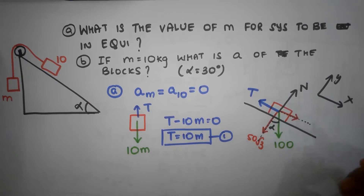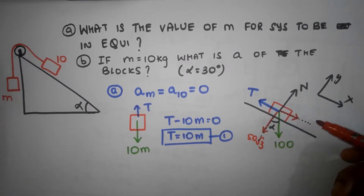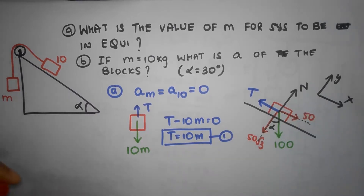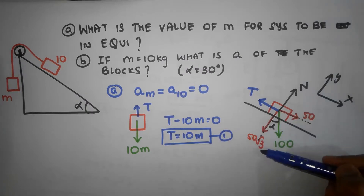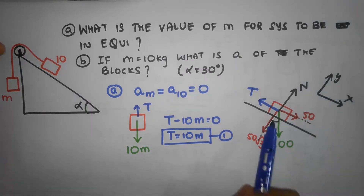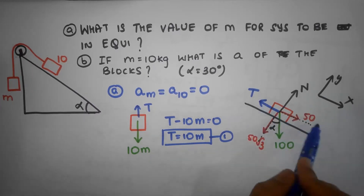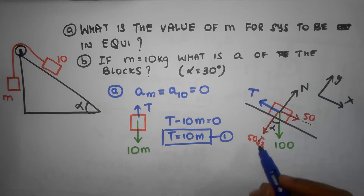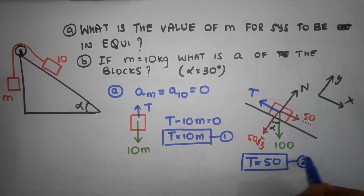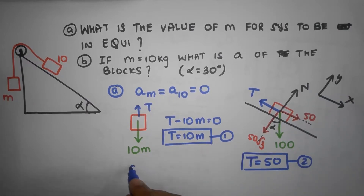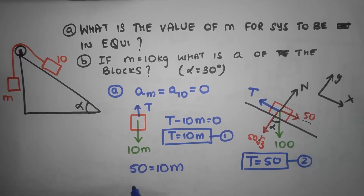The component along the x direction is 100 sin alpha, which is 100 times sin 30, equal to 50. Building the equation along the x direction: tension minus 50 equals zero, so tension equals 50 newtons. That's equation number two. From equations one and two: 50 equals 10m, so the mass needed for equilibrium is 5 kilograms.